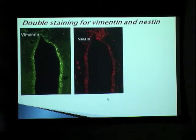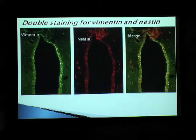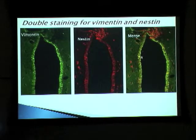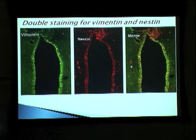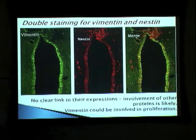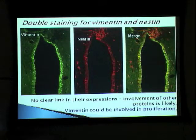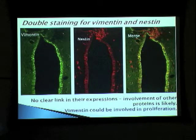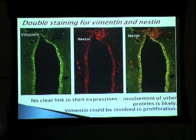When we performed a merge of the green and red, overlap of any green and red would result in a yellow image. Interestingly, in the merge we can see several yellow cells all along the third ventricle wall. What we can infer is that while nestin seems to be co-localizing with vimentin, there are several cells which seem to be only vimentin-positive. Right now it's too preliminary to state that there is a clear link in their expressions, but it is likely that several other proteins are acting as factors promoting the expression of nestin and vimentin, and it's also possible that vimentin could be involved in proliferation.